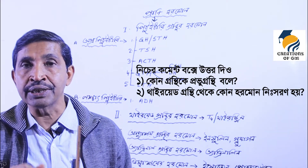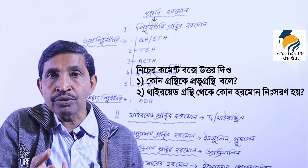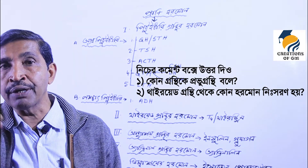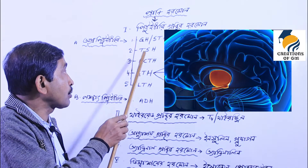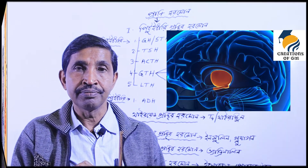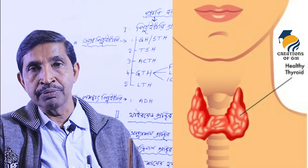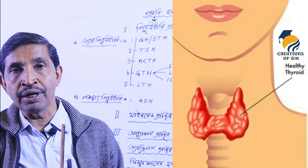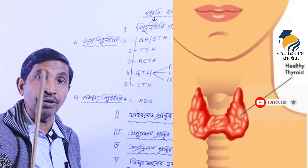The thyroid gland is present in our body — thyroid hormone is secreted from the thyroid gland. The hormone that is secreted from the pituitary gland to stimulate the thyroid gland is called thyroid stimulating hormone (TSH). It is found in the brain in the pituitary, and the thyroid gland is in the neck region. TSH travels through the blood and reaches the thyroid gland and controls its hormone secretion activity.